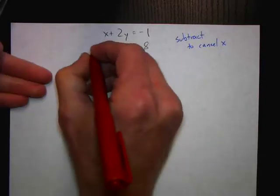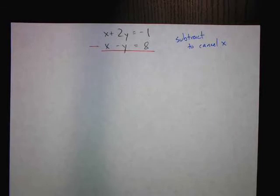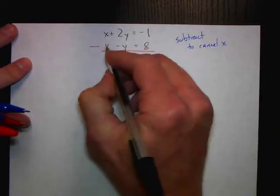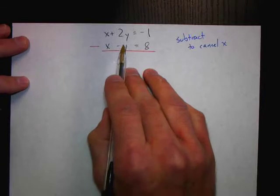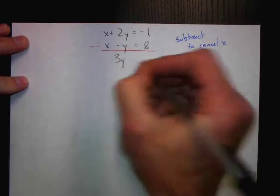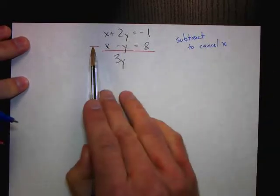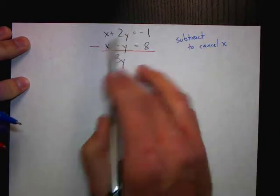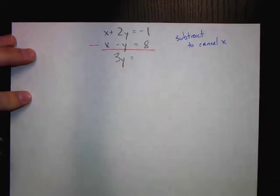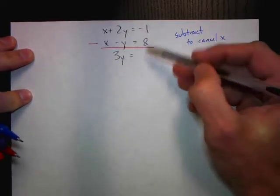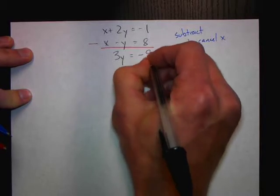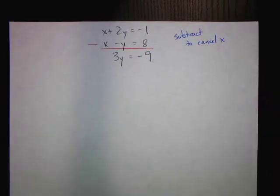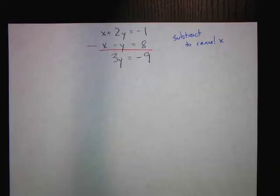Let's subtract these two equations, but we have to be careful when dealing with subtraction because we have some negative stuff going on. We have x minus x — totally gone. But now we have 2y minus negative y, which is actually 3y. We're not adding these two equations — we are subtracting them. And on the right side, we have negative 1 minus 8, which is negative 9. We have to be careful when subtracting.